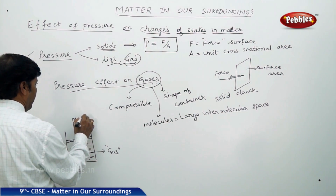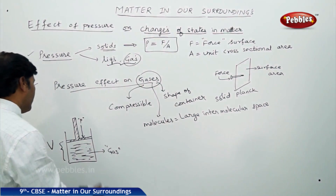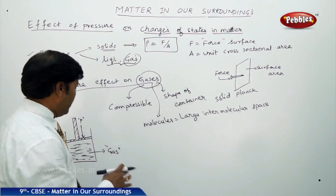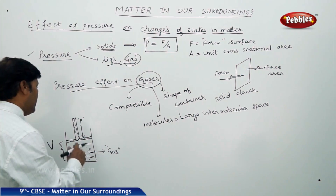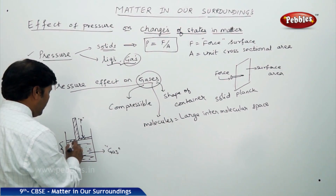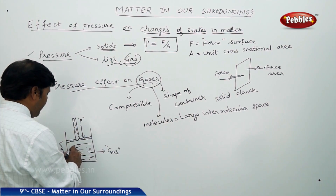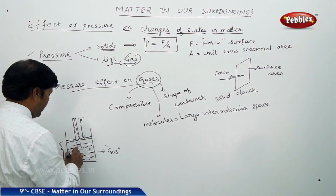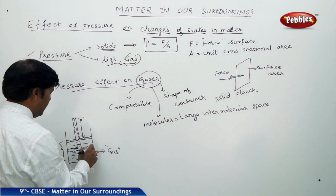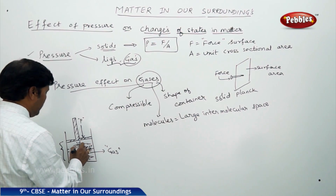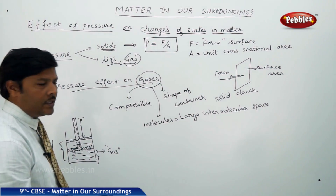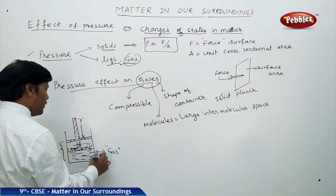When you are increasing the pressure, the piston moves downward into the container. You find that the piston moves a little bit inside the container, and the gas gets compressed. The new volume occupied by the gas after compression is small v.